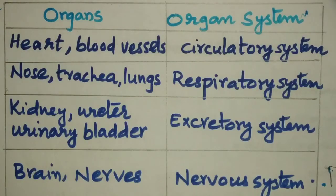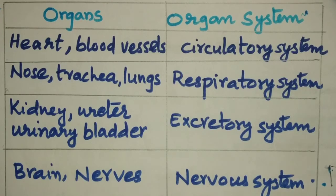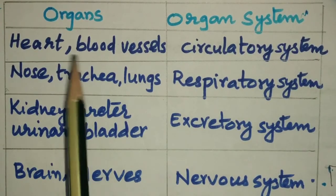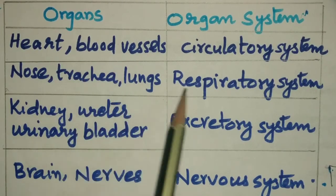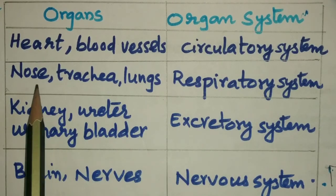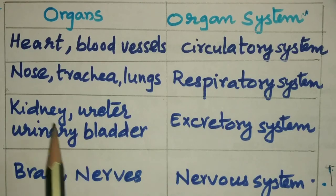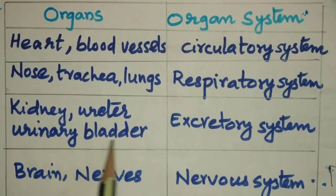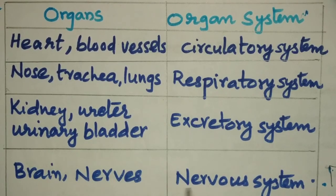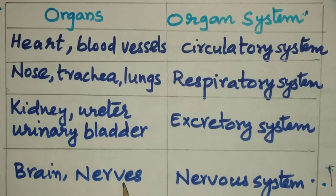Let us see which organ systems we have discussed and the organs involved in each system. First, the circulatory system, consisting of heart and blood vessels. The respiratory system consists of nose, trachea, and lungs. The excretory system consists of kidney, ureter, and urinary bladder. And the nervous system consists of brain and nerves. These are the different organ systems in our body.